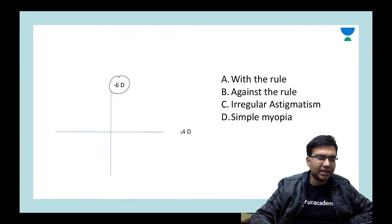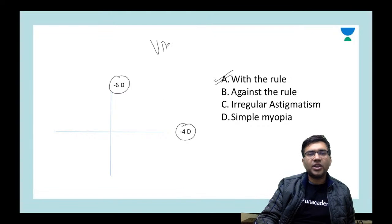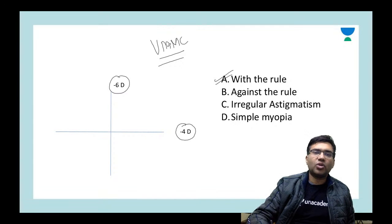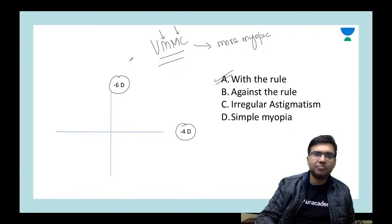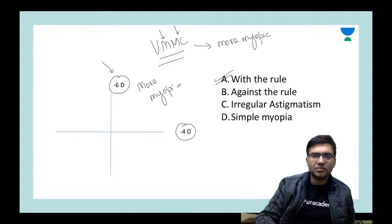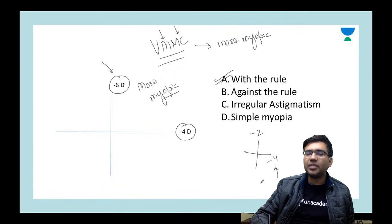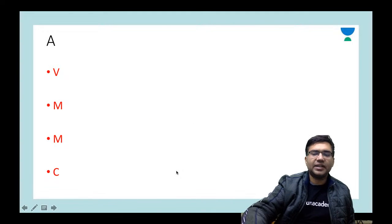If you have minus six diopters in the vertical meridian and minus four diopters in the horizontal meridian, this type of astigmatism is called 'with the rule.' Remember the mnemonic VMMC (Vardhaman Mahavir Medical College): Vertical Meridian is More Curved — more curved means more myopic. So minus 6 in the vertical meridian is with the rule. Conversely, more myopia in the horizontal meridian is against the rule astigmatism.